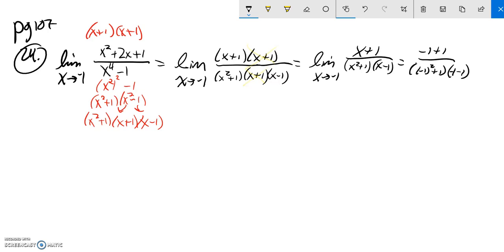So interestingly, in the numerator I get 0. That's okay. I can divide into 0. I just can't divide by 0. Notice down here I have 1 plus 1, so I have a 2, and this is a negative 2. So I have negative 4. And 0 divided by negative 4 is 0. So my answer is 0.